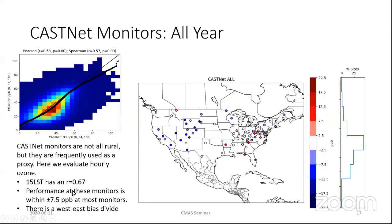When we look at the CASNAP monitors, here I'm showing every hour of every day as a scatter plot. We see generally a pretty good relationship between the observations and the model, but of course there's a fair amount of scatter. If we look at that in space, you see lower predictions in the west, whereas the east tends to be less biased.